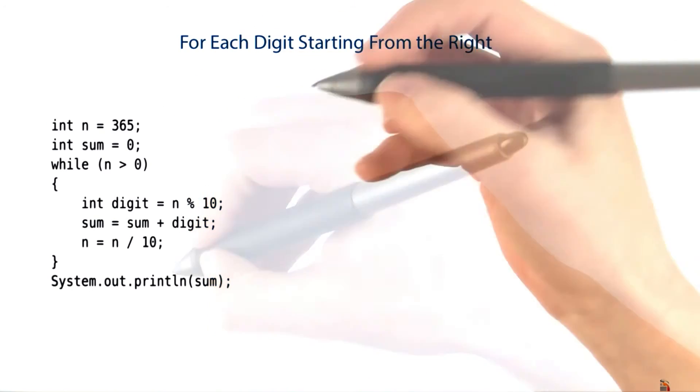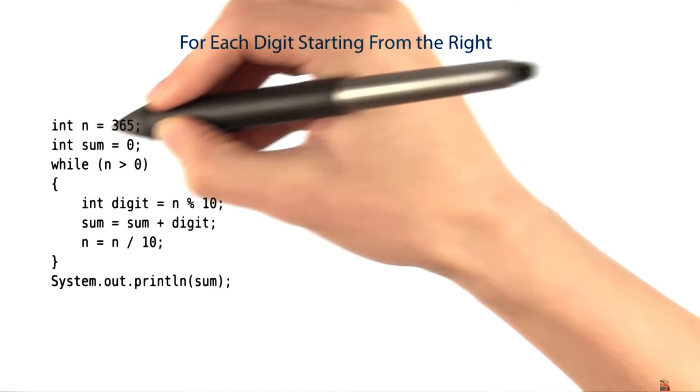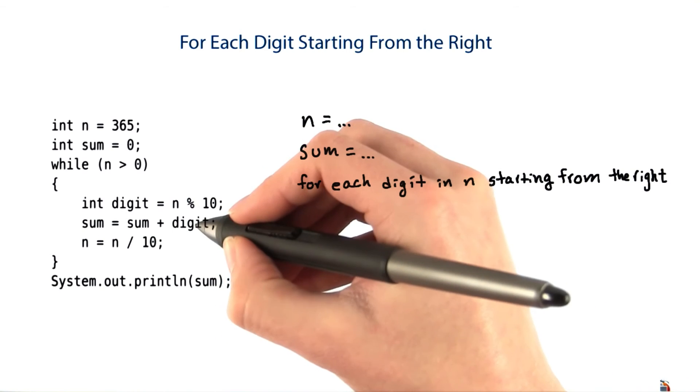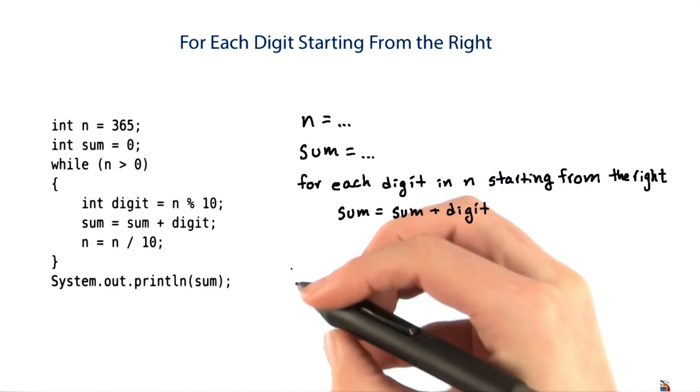When we traced this code, we saw that it set n and sum. And then for each digit in n, starting with the one on the right, it added the digit to the sum. And then at the end it printed the sum.